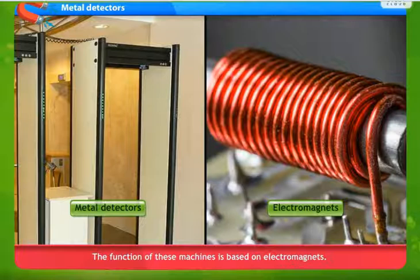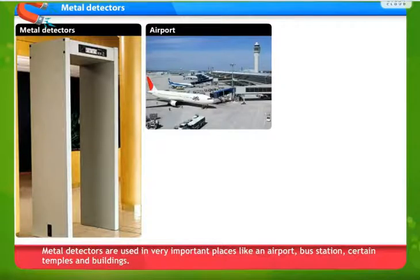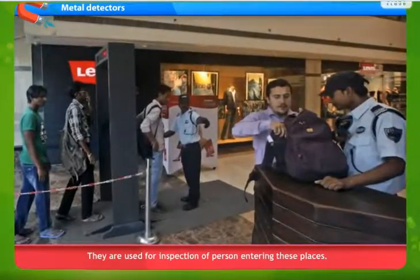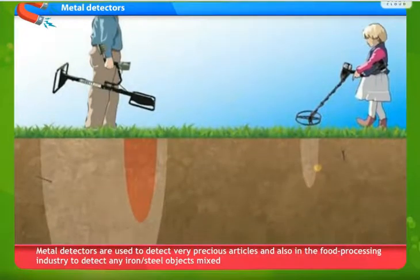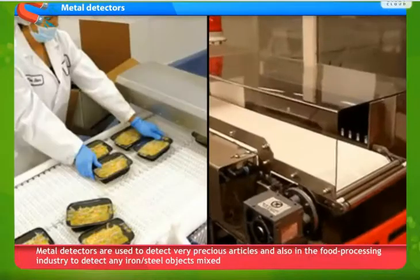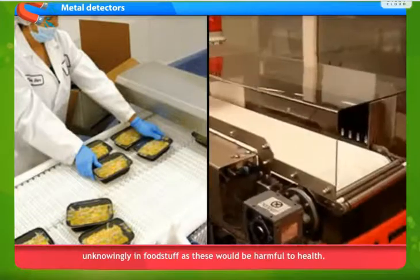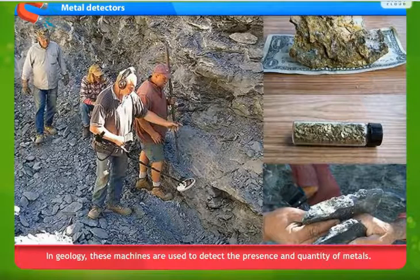We have metal detectors and electromagnets. Metal detectors are used in very important places like airports, bus stations, certain temples and buildings. They are used for inspection of persons entering these places. Metal detectors are used to detect very precious articles and also in the food processing industry to detect any iron or steel objects mixed with it unknowingly in foodstuff, as these would be harmful to health. In geology, these machines are used to detect the presence and quantity of metals.